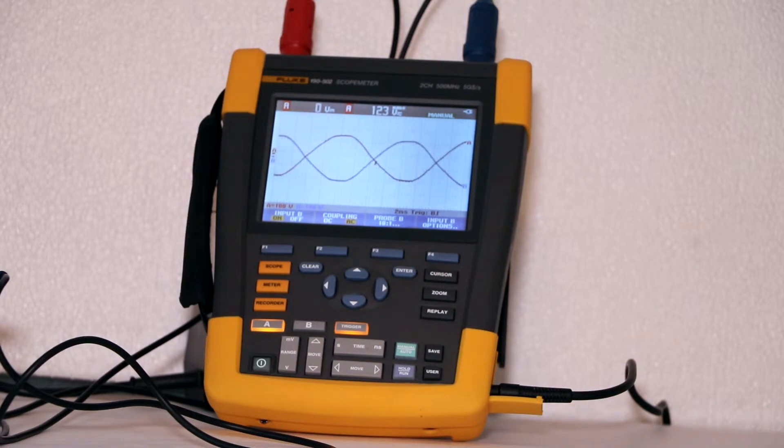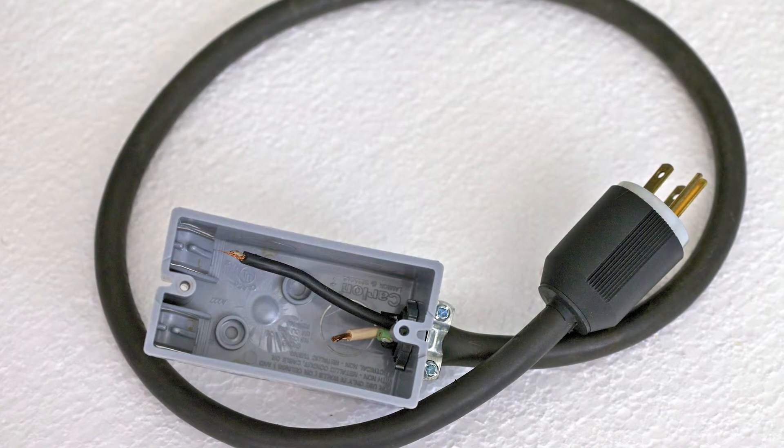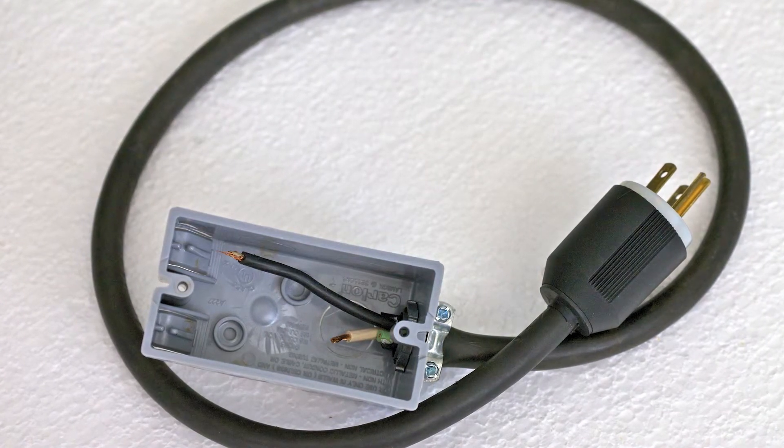With a bench type oscilloscope such a hookup should absolutely not be made because it would result in a high current short circuit. This is because in effect the probe whose ground return lead would be connected to the hot wire would carry fault current to the oscilloscope ground plane